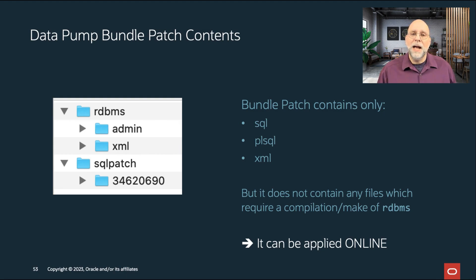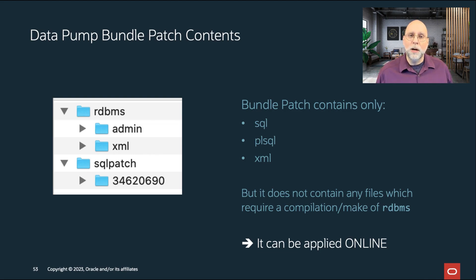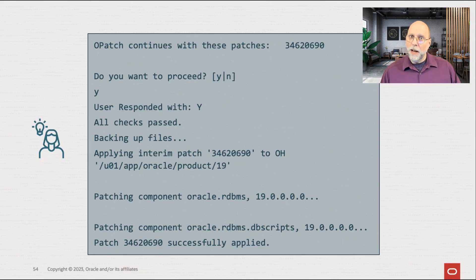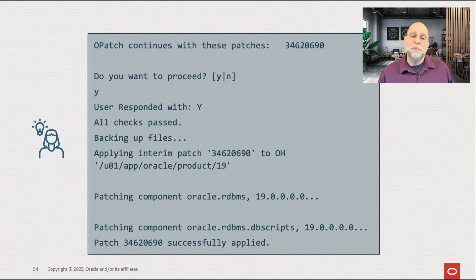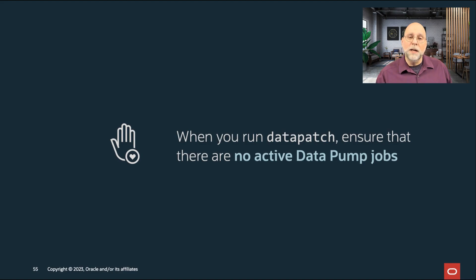This non-binary online patch install is in some ways actually better than a RAC rolling install — it just has the caveat that you can't have Datapump running when you install it. Installing a patch has two parts: first is OPatch, which for the Datapump bundle patch is simple — it runs while the database is running, placing wrapped PL/SQL packages (PLB files) or SQL scripts into your Oracle home. Then you run Datapatch, and the key is to run it when nobody is using Datapump on the system.